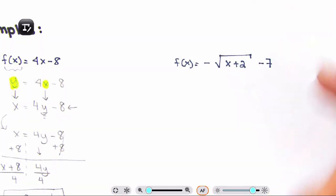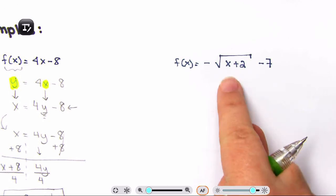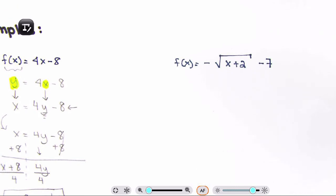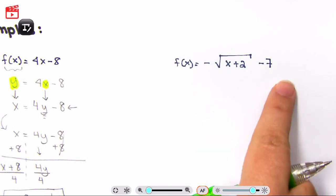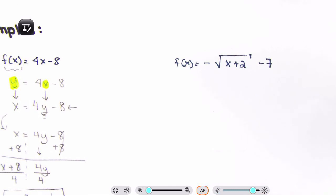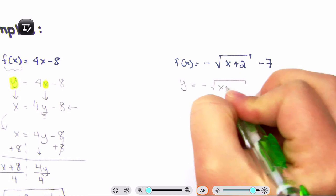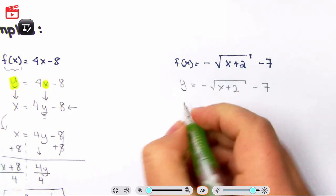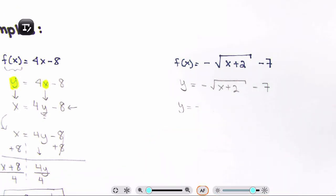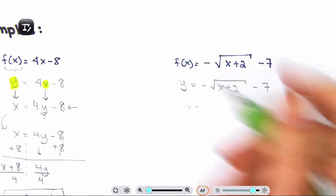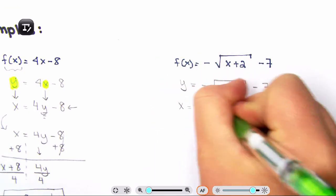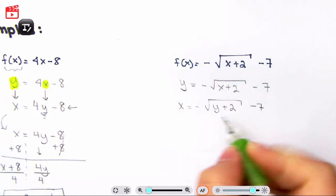Before continuing, make sure the inverse exists — it has to pass the horizontal line test. If it's a function, it has to be one-to-one for an inverse to exist. You can check with desmos.com if you're not sure how the function looks. For this next example with a square root, step one: rewrite f(x) as y. Step two: switch x and y. You can start to combine these steps as it becomes easier after a few.